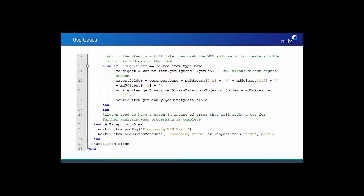Moving on with the rest of the script, we have another section which checks to see if the item type is a TIFF. If the TIFF isn't encrypted, we use the location that we specified previously, get the MD5 digest of the item, and export the item to disk. If during the operation an exception occurs, a tag would be applied to that item — in this case, a top-level tag called Processing with a sub-tag called WSS Error — and then custom metadata would be added to the item containing any processing error information. Finally, the item is closed and the worker will move on to the next item.